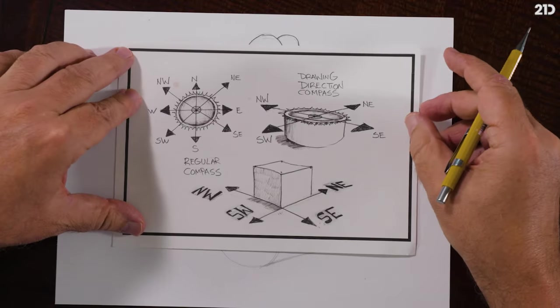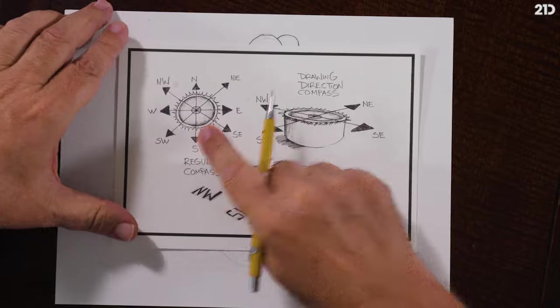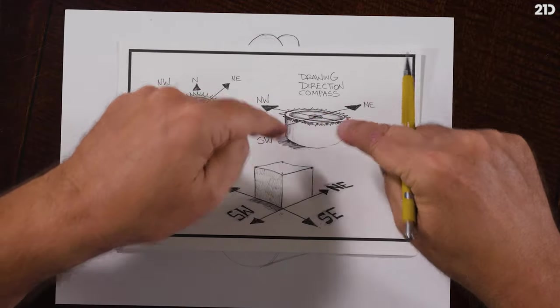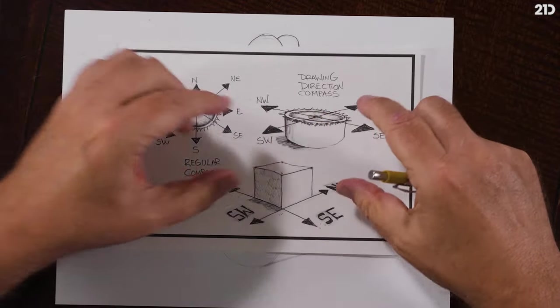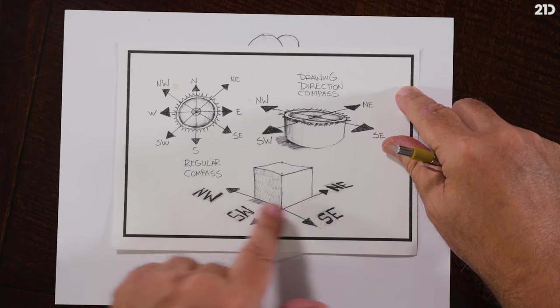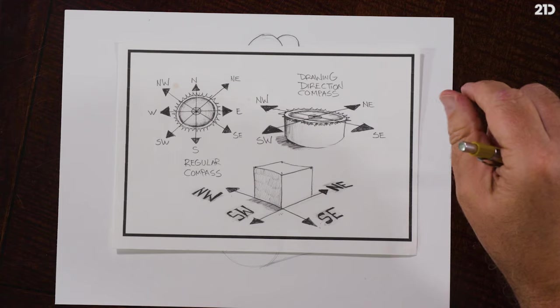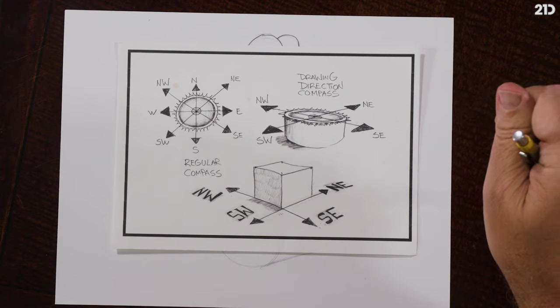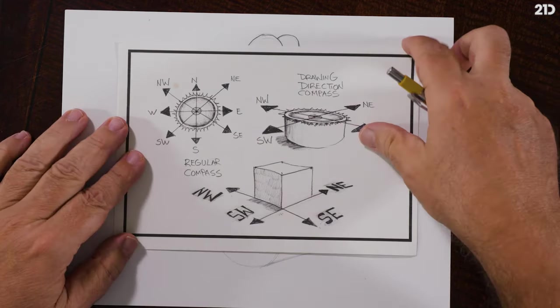In fact, I have a really cool chart, the drawing direction compass. See, here, this is a regular compass, that's a normal compass right there. This is a compass that's flopped over, that's foreshortened, that's squished. And then here's the drawing compass reference.